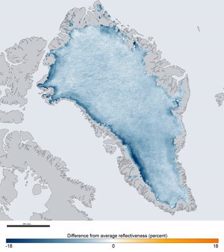On the ice sheet, temperatures are generally substantially lower than elsewhere in Greenland. The lowest mean annual temperatures, about −31 degrees Celsius (−24 degrees Fahrenheit), occur on the north-central part of the North Dome, and temperatures at the crest of the South Dome are about −20 degrees Celsius.